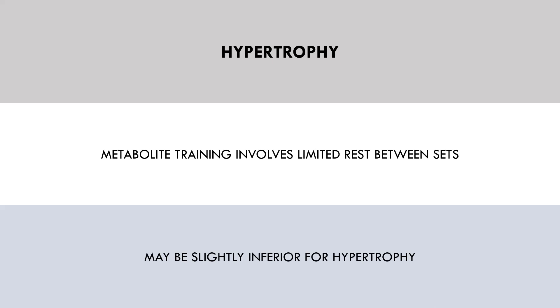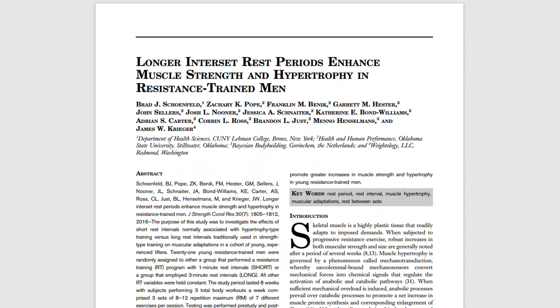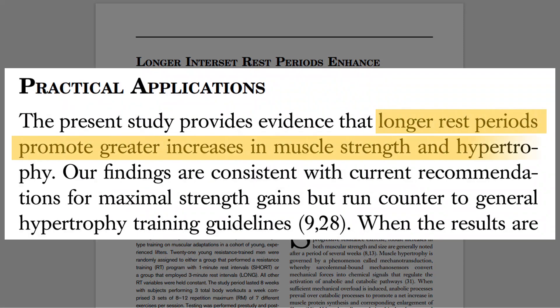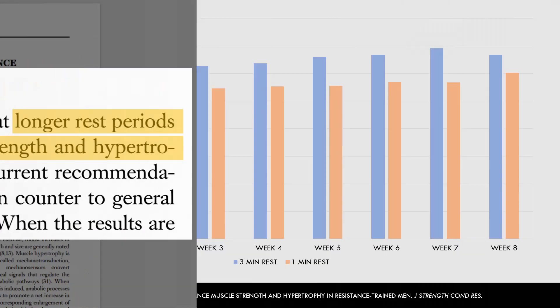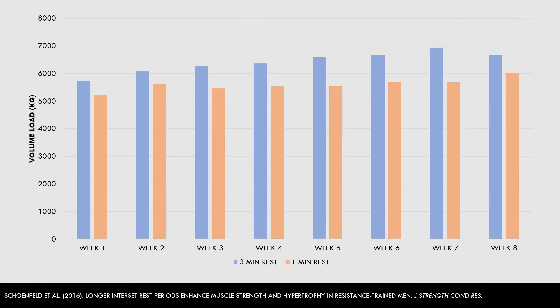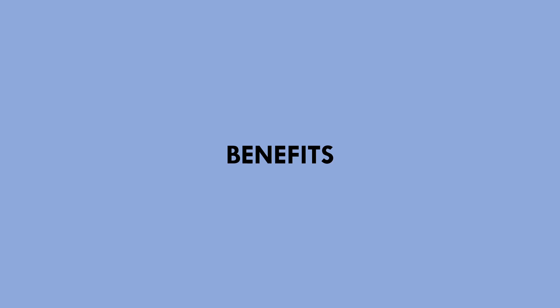The reason for this advantage is probably due to shorter rest periods limiting performance. One study found that three-minute rest periods between sets were superior for muscle growth compared with one-minute rest. Volume load was greater in the longer rest period group — in other words, longer rest periods allowed trainees to perform more reps and lift more weight each set. So metabolite techniques are probably slightly less hypertrophic per set compared with traditional resistance training with longer rest periods.